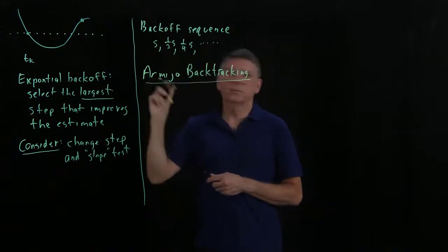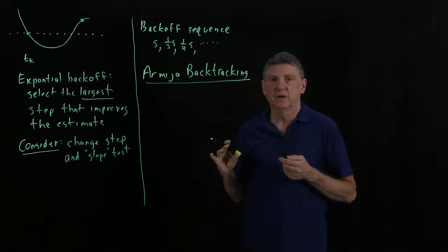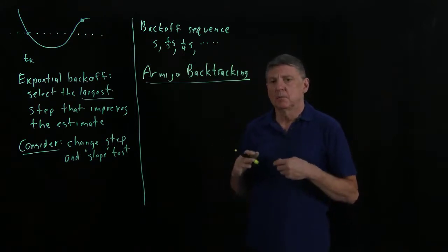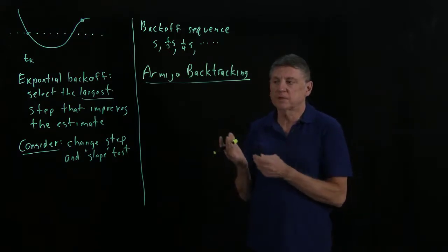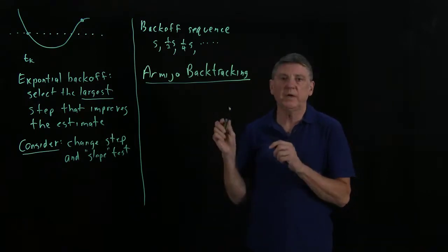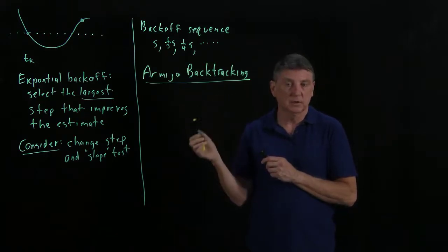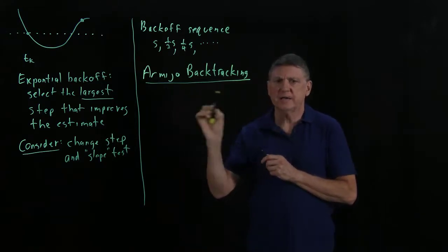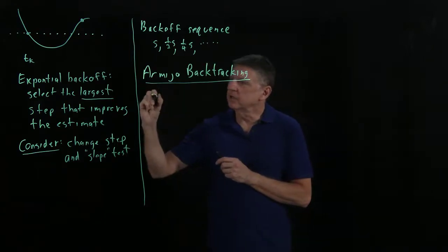And Larry Armijo, in 1964, developed and proved this method for a function that has a vector argument. And part of this involves conditions on the function locally that are called Lipschitz conditions. You can check Larry Armijo's article. You can check what the Lipschitz conditions are. For now, we'll simply try to understand what this is at all.